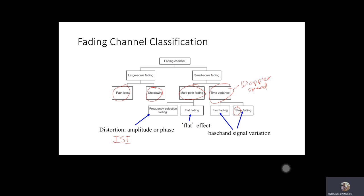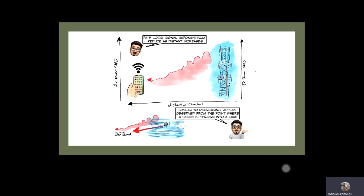I'd like to share a drawing I prepared using my Apple Pencil and Adobe Fresco. This drawing describes the first category of large scale fading — path loss. You have a transmitter here and a receiver; as the receiver moves away from the transmitter — in this case a telco tower — the signal slowly decays exponentially. The path loss phenomenon is analogous to throwing a stone into a lake and observing the decreasing ripples from the impact center.